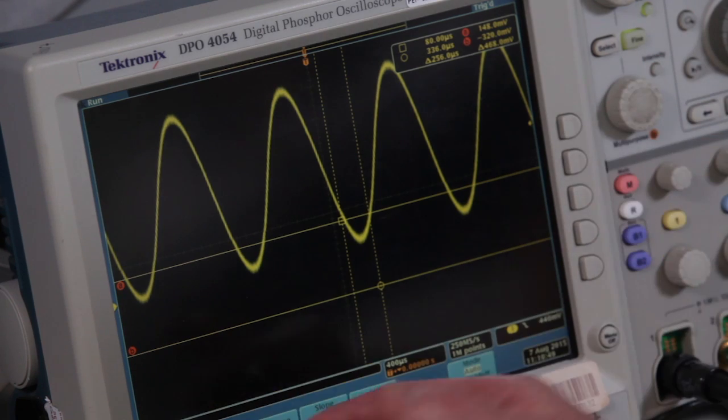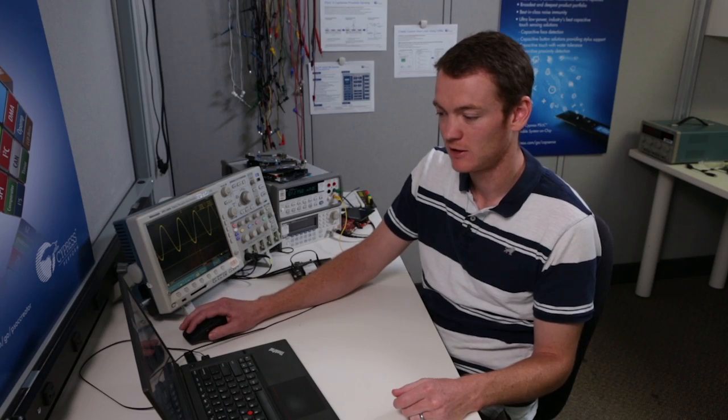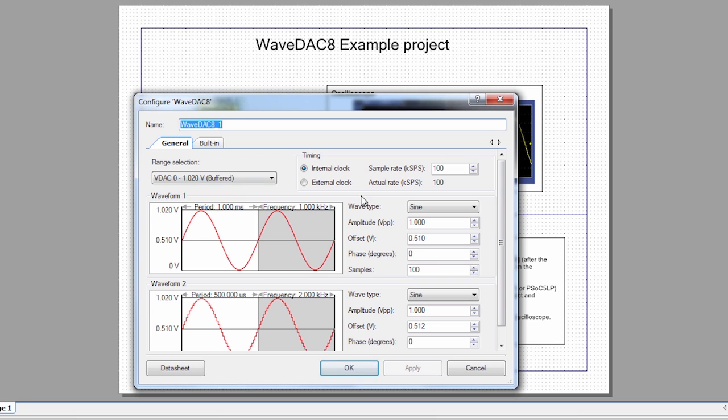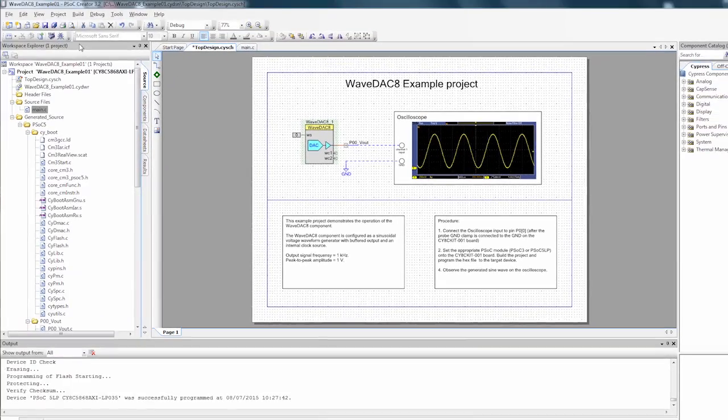So, that's pretty interesting. Let's see if we can make it a little more interesting. Let's go back to the WaveDAC. And this time, let's choose a triangle wave. Apply, and we'll program this in.